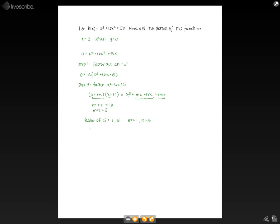So now what we have is x plus 1, x plus 5. So now we need to combine those back together. So when we do that we get 0 equals x times x plus 1 times x plus 5.